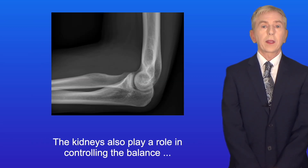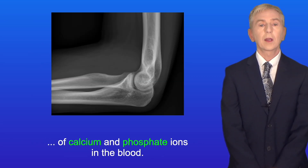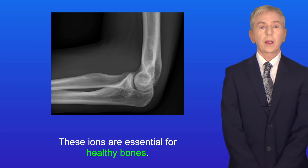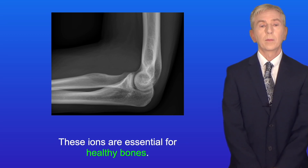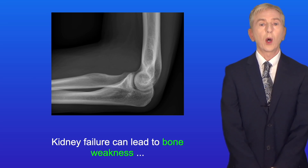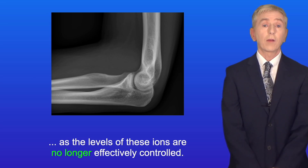Now, the kidneys also play a role in controlling the balance of calcium and phosphate ions in the blood. These ions are essential for healthy bones. So, kidney failure can lead to bone weakness as the levels of these ions are no longer effectively controlled.